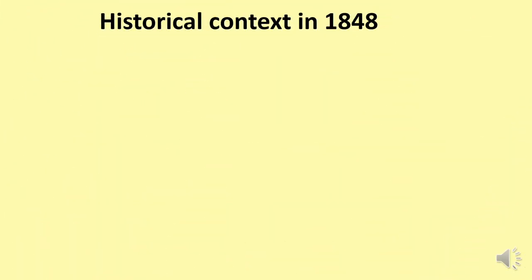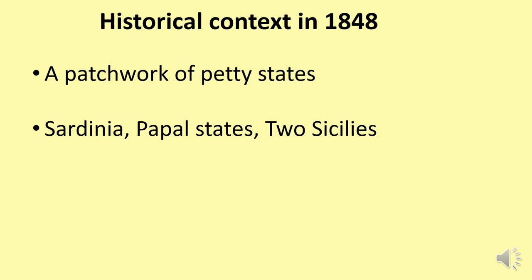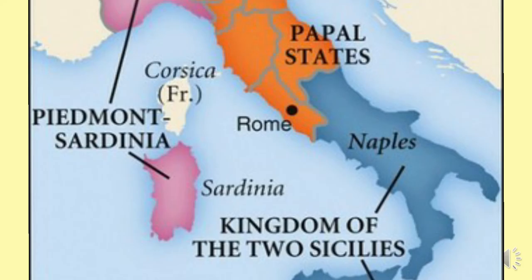Let's talk about the historical context in 1848. If you remember, in 1848 in Europe there was a series of revolutions — the most important one being the February Revolution in France. At that time, we can say that Italy was a patchwork of petty, unimportant states. Sardinia, the Papal States, and the Kingdom of the Two Sicilies were the independent states. This is very important to remember: they were independent.